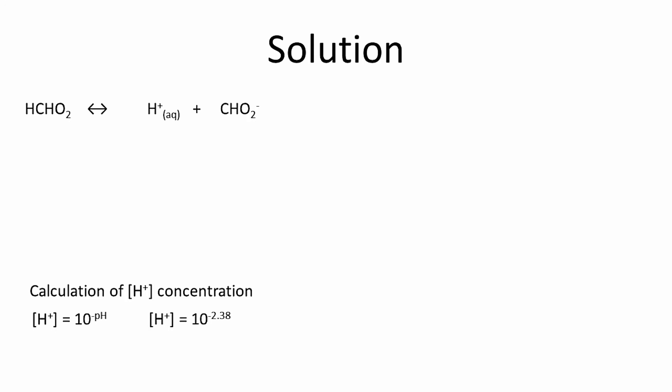H⁺ is equal to 10 to the power of negative 2.38, which equals 4.16 × 10⁻³ moles per liter, or 0.00416 moles per liter of hydrogen ions produced when 0.1 mole of formic acid is dissolved in water.